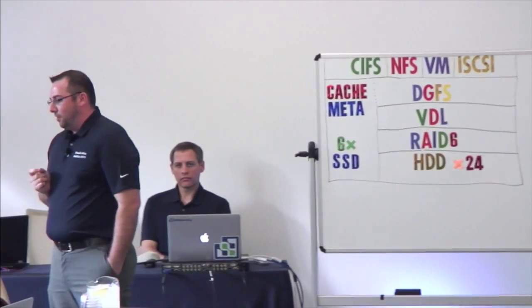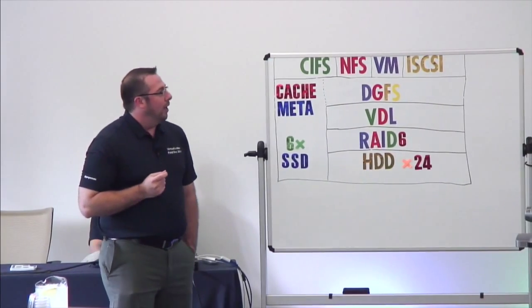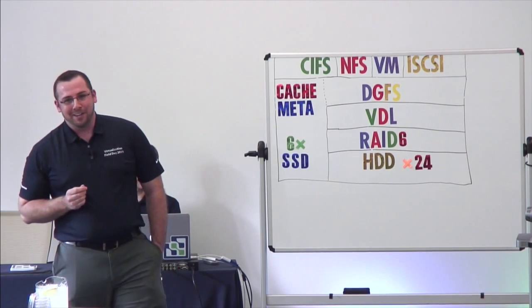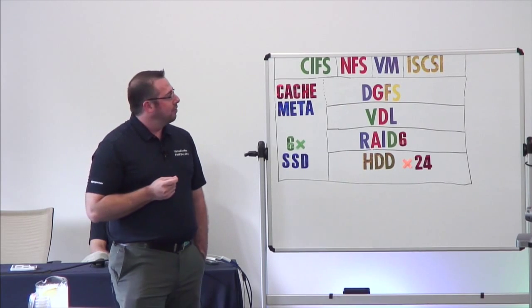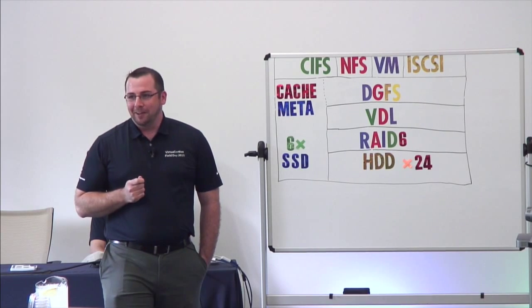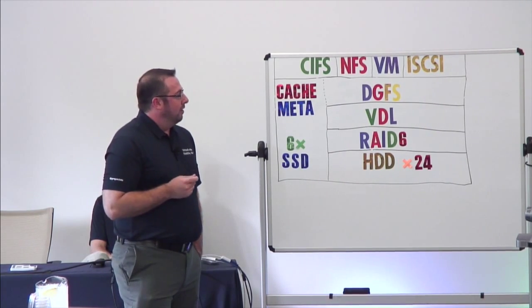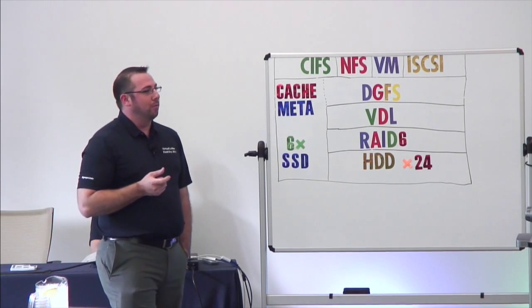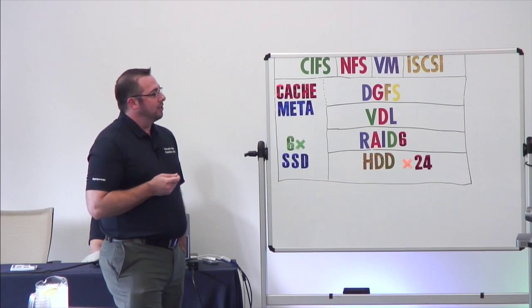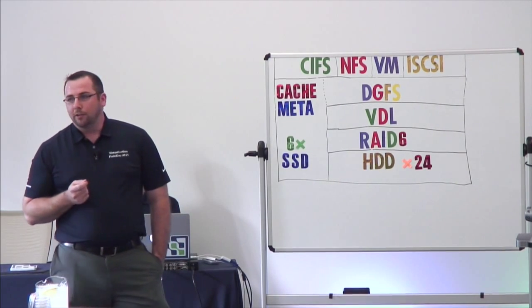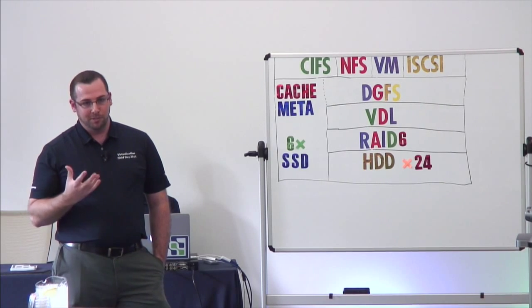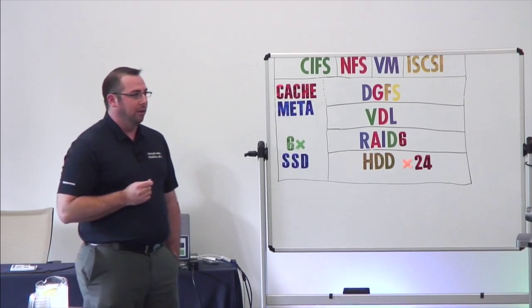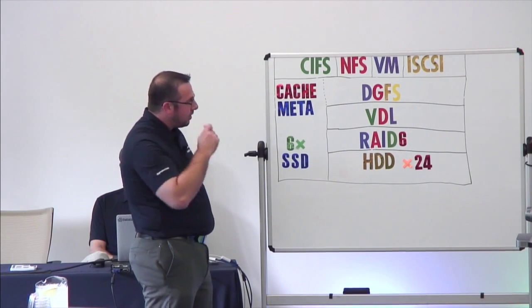With all the novel things we're doing in this product, writing a basic file system from scratch was not in our best interest. We use ZFS. We chose ZFS because it's been around a long time, it's very robust, reliable, and stable. It has a very clean transaction engine that makes it simple to optimize different performance aspects of what you're trying to do within your file system, and out of the box it comes with inline compression and inline deduplication.